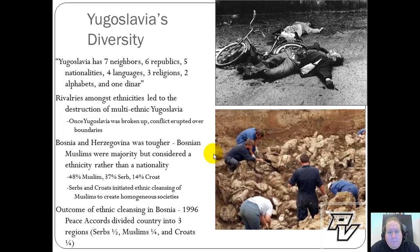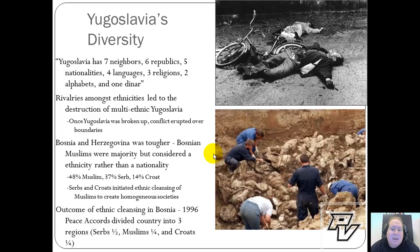One of the most difficult areas to settle was Bosnia and Herzegovina. Bosnian Muslims were a majority in this region and considered themselves more of an ethnicity than a nationality. The region was about half Muslim, 40% Serb, and 14% Croat — a great diversity with no clear majority. The Serbs and Croats, who were the groups in power, attempted ethnic cleansing of the Muslims to create a homogeneous society. As an outcome, peace accords set in 1996 divided the country into three regions: Serbs gained half, Muslims one quarter, and Croats one quarter.